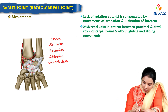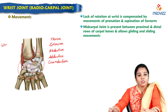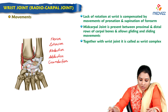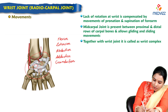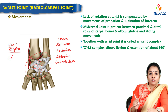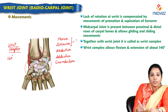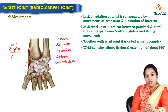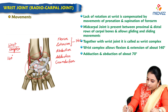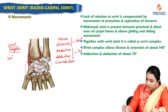The midcarpal joints, between the proximal and distal carpal bones, allow gliding and sliding movements. Together with the wrist joint they form the wrist complex. The wrist complex allows flexion and extension together with a range of motion of around 140 degrees of flexion and extension, and around 70 degrees of adduction and abduction.